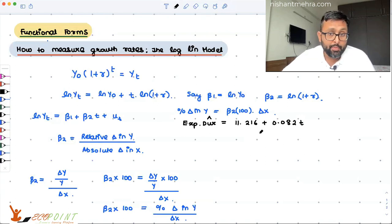So T is the time period. So how do we interpret this? Over the time, over a given period, expenditure on durable goods and services have increased by how much? Beta 2 into 100. So time period is moving from T equals 1 to T equals 2. So over a period of time,